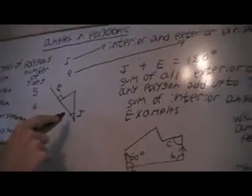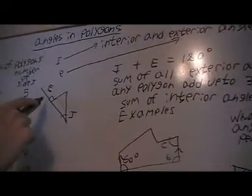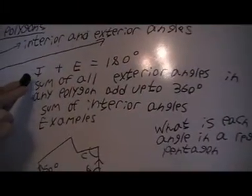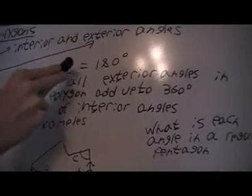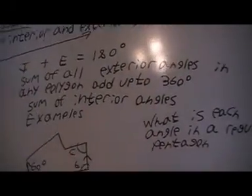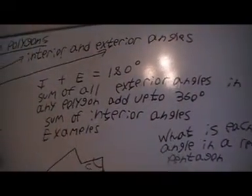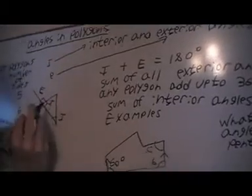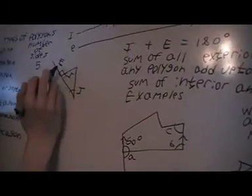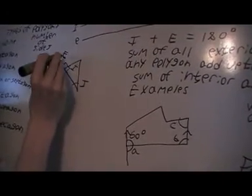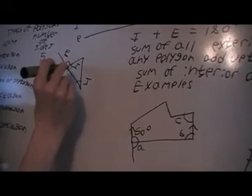So inside the shape are called interior angles and outside the shape are called exterior angles. And we'll have a rule here that says the interior angle plus the exterior angle is 180. So this A and this I would add up to 180.